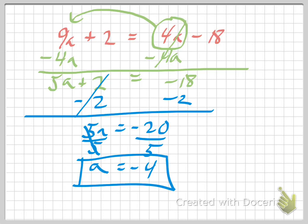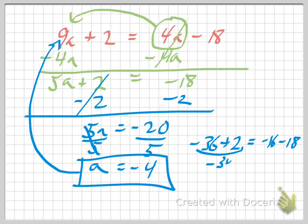Now, plug it back in and see if that works. We get negative 36 plus 2. And will that equal 4 times negative 4, which would be negative 16 minus 18. Remember, when they're different signs, it stays different. Negative 36 plus 2 will bring us back up to negative 34. And negative 18 and negative 16, they're both negative, so we're going to combine those, find the sum. And sure enough, we're going to get negative 34. So negative 34 equals negative 34, and it does check.